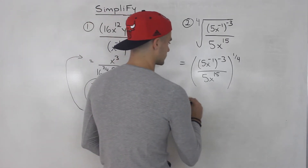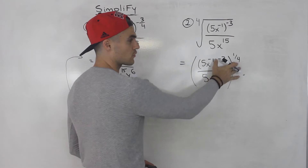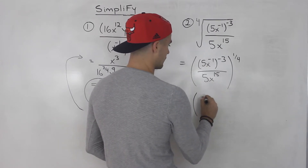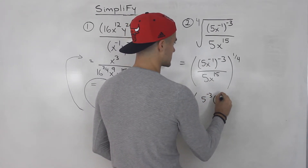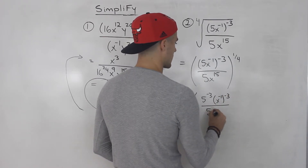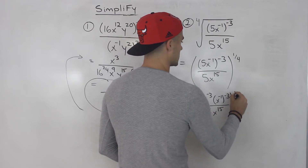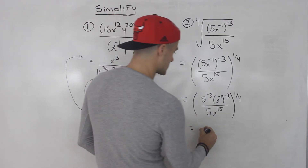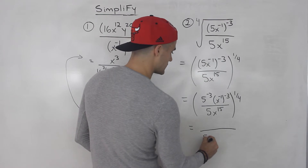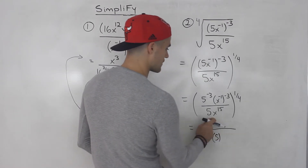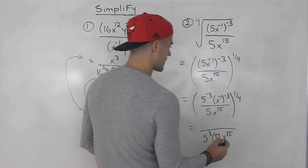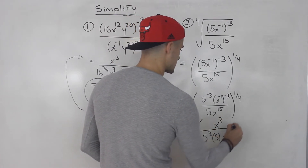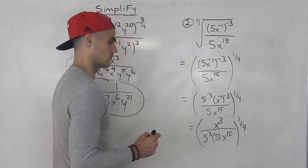From here, let's simplify the bracket first before dealing with the outside exponent. I'm going to distribute this negative 3 inside the bracket, so I'll have 5 to the negative 3, and x to the negative 1 to the negative 3, all over 5x to the 15 — all to the power of 1 over 4. I can bring 5 to the negative 3 down, so this becomes 5 to the power of positive 3 times this 5, and negative 1 times negative 3 gives us positive 3. This is still all to the power of 1 over 4.